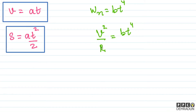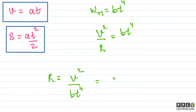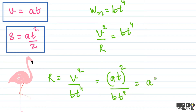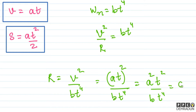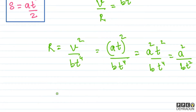Now we need to find R as a function of distance covered s, not as a function of time. From v²/R = bt⁴, we get R = v²/(bt⁴). Substituting v = at, we get R = (at)²/(bt⁴) = a²t²/(bt⁴) = a²/(bt²).